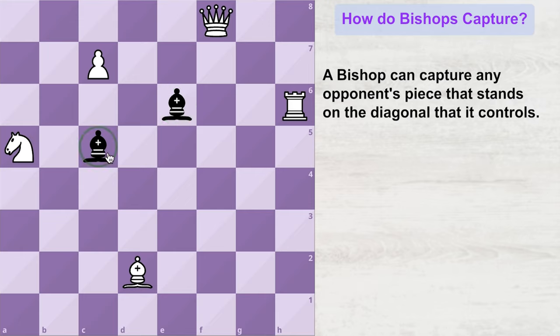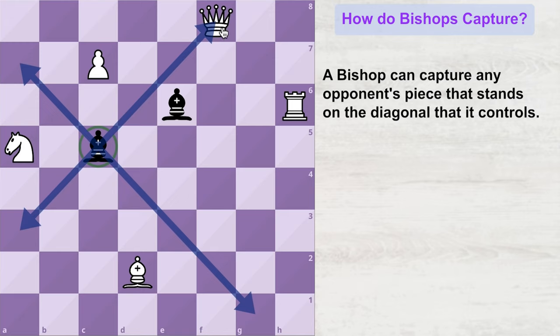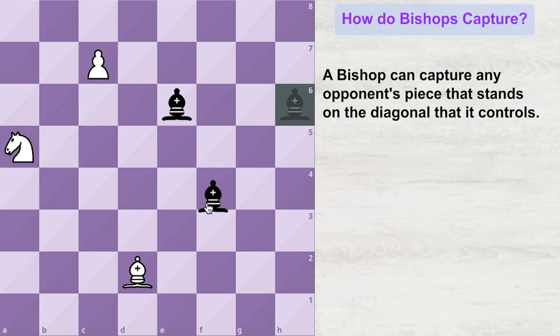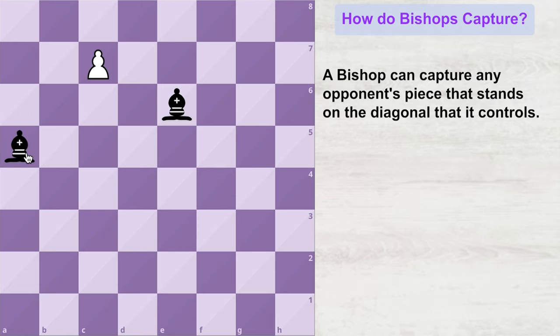Similarly, this dark squared bishop can capture any opponent's piece which stands on any of the diagonals it controls. Since it controls these two diagonals and the opponent's queen is standing on one of them, this bishop can capture the opponent's queen, followed by the rook, then the bishop, then the knight, and finally the pawn.